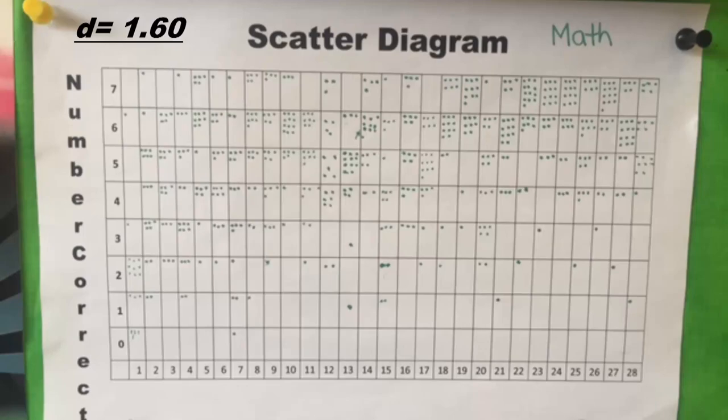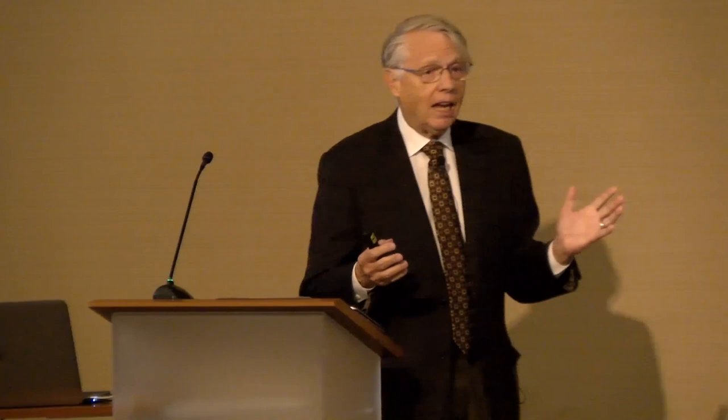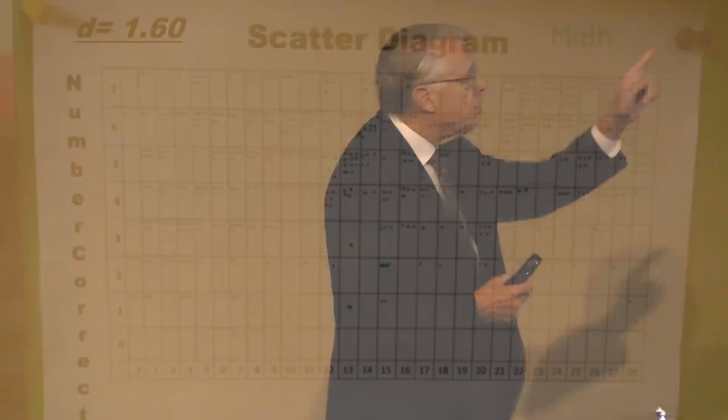This is a first grade teacher's math standards — she sent me a picture of her scatter diagram. Many of the teachers I wrote to said they already got rid of it and don't have it anymore. But when they do send me a photograph, I can calculate the effect size. I learned from John Hattie how to do that, and she had an effect size of 1.6.